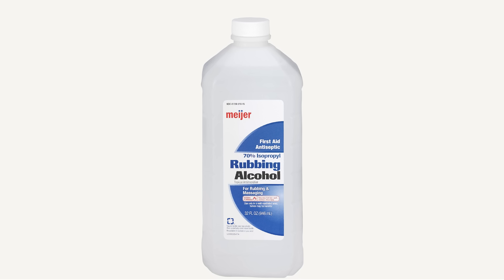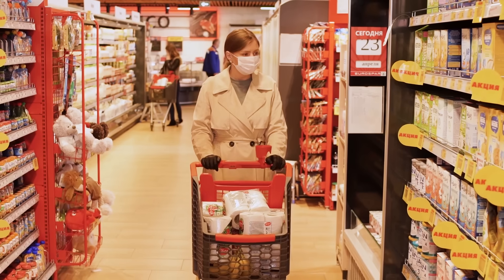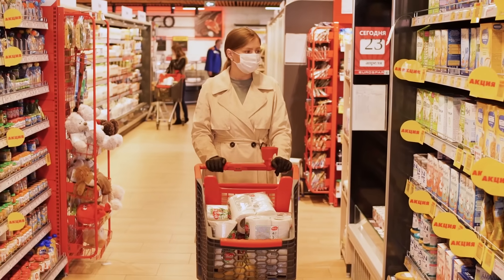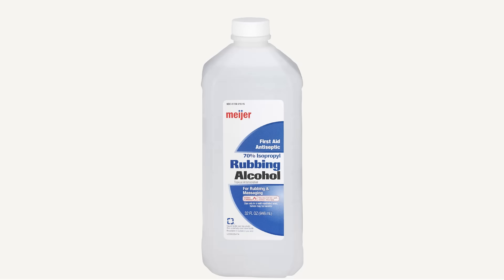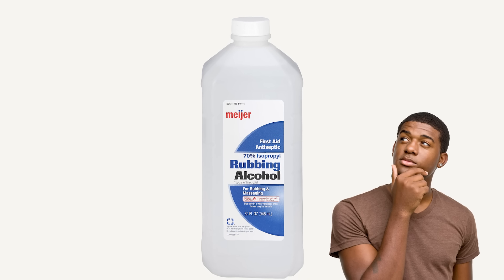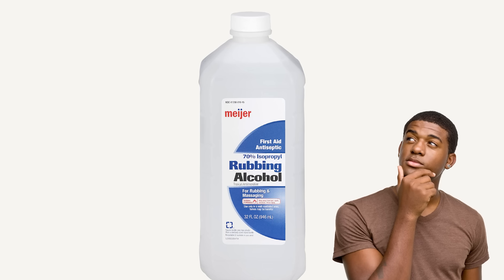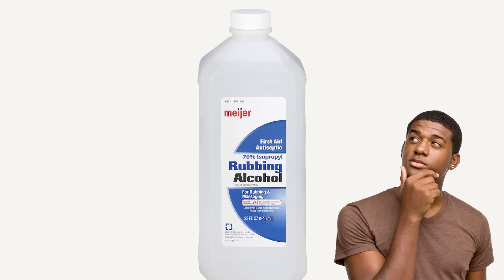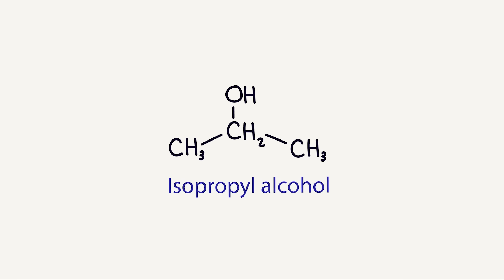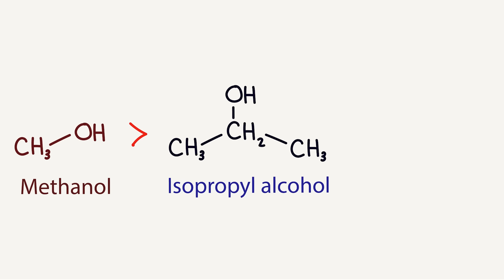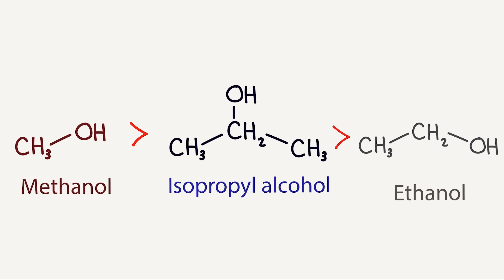Lethal additives no longer had to be added because the isopropyl alcohol itself was unsafe to drink. Now, the majority of rubbing alcohol you buy at the drugstore is the 70% isopropyl alcohol solution. Though ethanol-based is still sold, it's produced much less. So, how unsafe is this 70% isopropyl alcohol to drink? Well, it's not as dangerous as methanol, but not as safe as drinking ethanol.